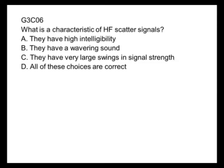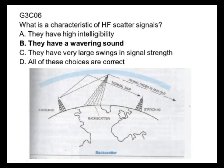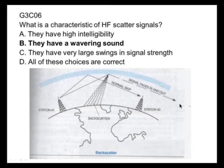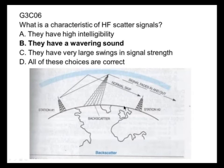What are the characteristics of HF scatter signals? HF scatter signals have a wavering sound. Here's your normal skip — but with scatter, the signal isn't quite skipping because it's not coming back to Earth normally. We can get some reflection back from the ionosphere, but it's not a solid signal. This occurs within the skip zone where normally you couldn't hear anything.